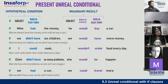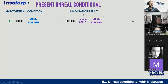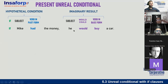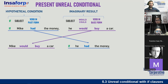Before we continue, any questions? No questions — okay, great. Now take a look: 'If Mike had the money, he would buy a car.' You can also say it like this: 'Mike would buy a car if he had the money.' You can change the order of the two clauses — it's the same sentence with the same meaning.